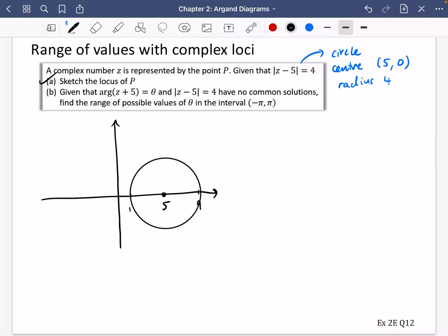It then says, given that arg(z + 5) = θ and the thing that we've just drawn have no common solutions, find the range of possible values of θ. Okay, so let's see if we can figure out what we might be able to do here. I think we need to draw this, right? I think we need to draw what this one might be. In fact, I'm going to draw this one in red anyway. Let's ignore the fact about common solutions.